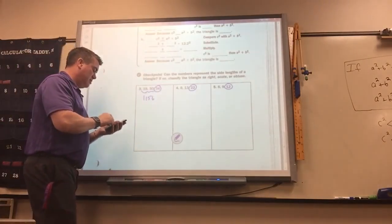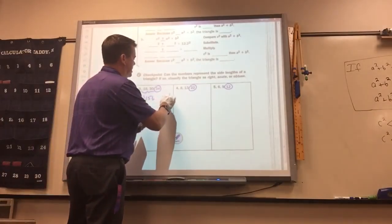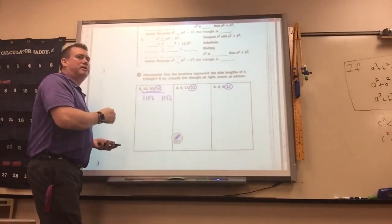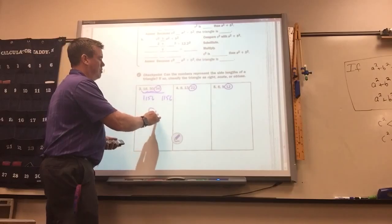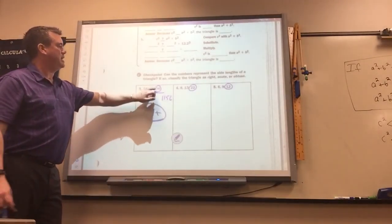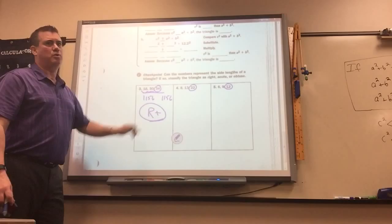34 squared is also 1156. So what kind of a triangle is that? Remember, if a squared plus b squared equals c squared, it's a right triangle.